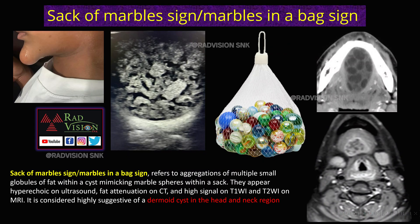Next is the Sack of Marbles Sign, also called Marbles in a Bag Sign. There is a swelling in the floor of the mouth — in the chin region. There is a cystic lesion with multiple echogenic bar-like or spear-like structures noted in the cyst, which mimics a sack of marbles or bag of marbles appearance. These are classically seen in dermoid cysts of the head and neck region. They appear hyperechoic on ultrasound, show multiple fat density globules on CT, and on fat-suppressed MR sequences show multiple hypointense areas within the cyst.